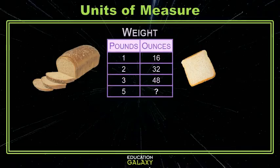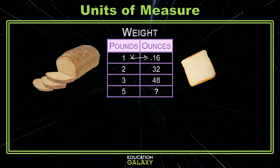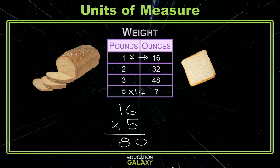Here we have pounds and ounces. A piece of bread is about an ounce and a loaf of bread is about a pound, so the pound is the bigger unit of measure. To get from that bigger unit to the smaller one, we multiply. We are given that 1 pound equals 16 ounces, which tells us we can multiply by 16. So 16 times 5 tells us that 80 ounces are in 5 pounds.